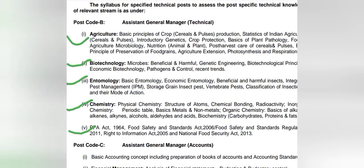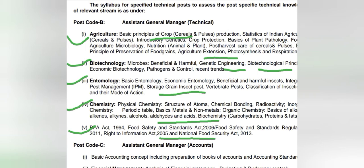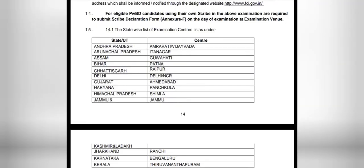In Agriculture, topics include basic principles of crops, cereals, pulses, etc. In Biotechnology, topics cover genetic engineering and biotechnology principles. Entomology covers how insects attack storage systems. For Chemistry, NCERT-level content is required. The relevant Acts can be covered from Google, and additional study material will be provided.